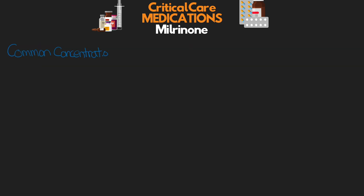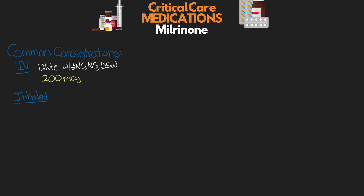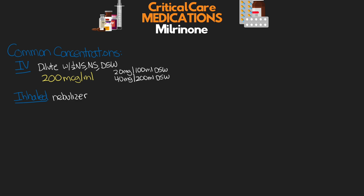The common concentrations: there are really two ways to give this medication — either injection or continuous infusion, and then as an off-label usage, inhaled via nebulizer. For continuous infusion, various vial sizes are available but all should be diluted with either half-normal saline, normal saline, or D5W to a final concentration of 200 micrograms per mL. Commercially available bags include 20 mg in 100 mL D5W or 40 mg in 200 mL D5W — both at 200 micrograms per mL. For inhaled administration via nebulizer, a 1 milligram per mL concentration is used.